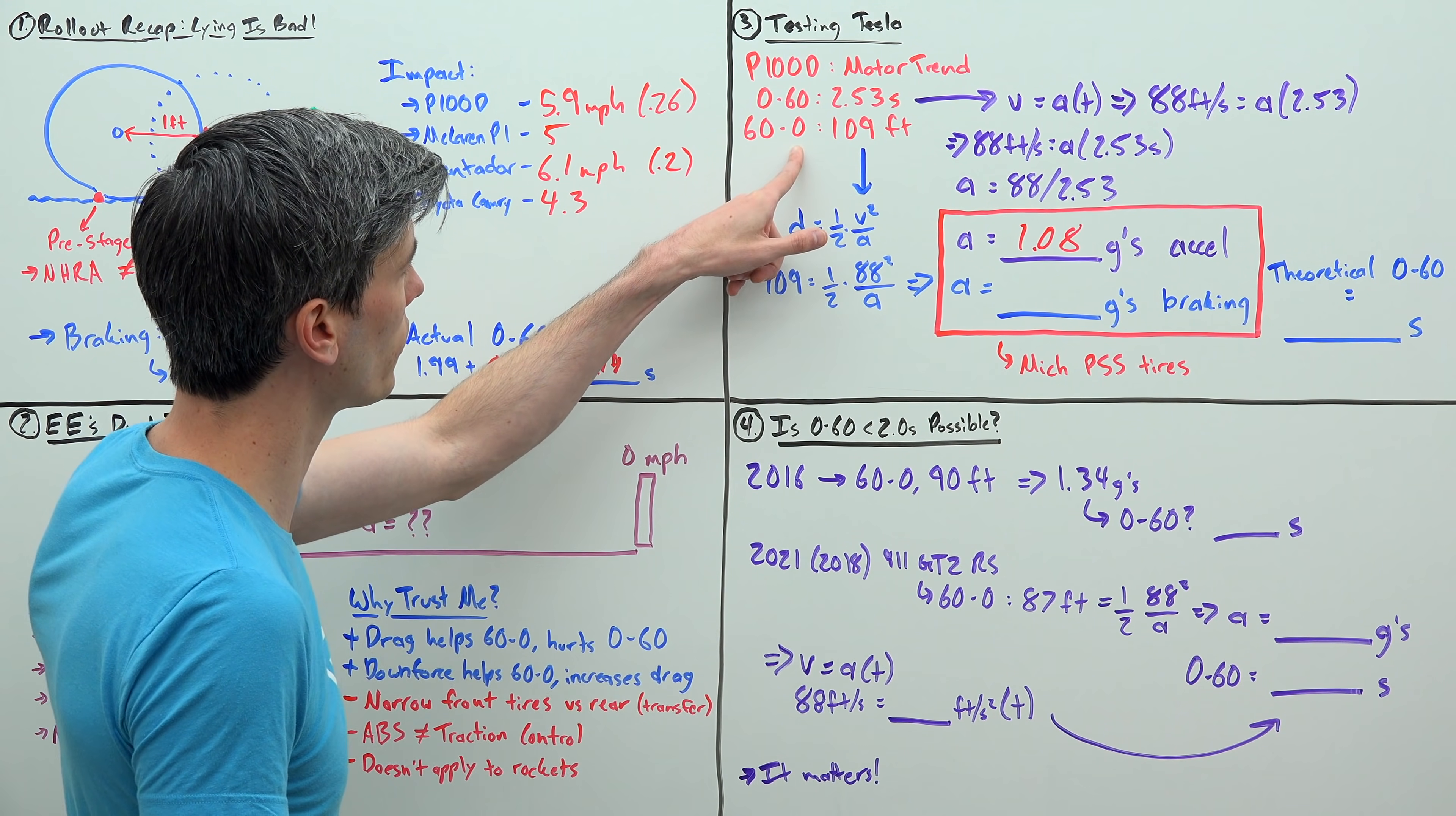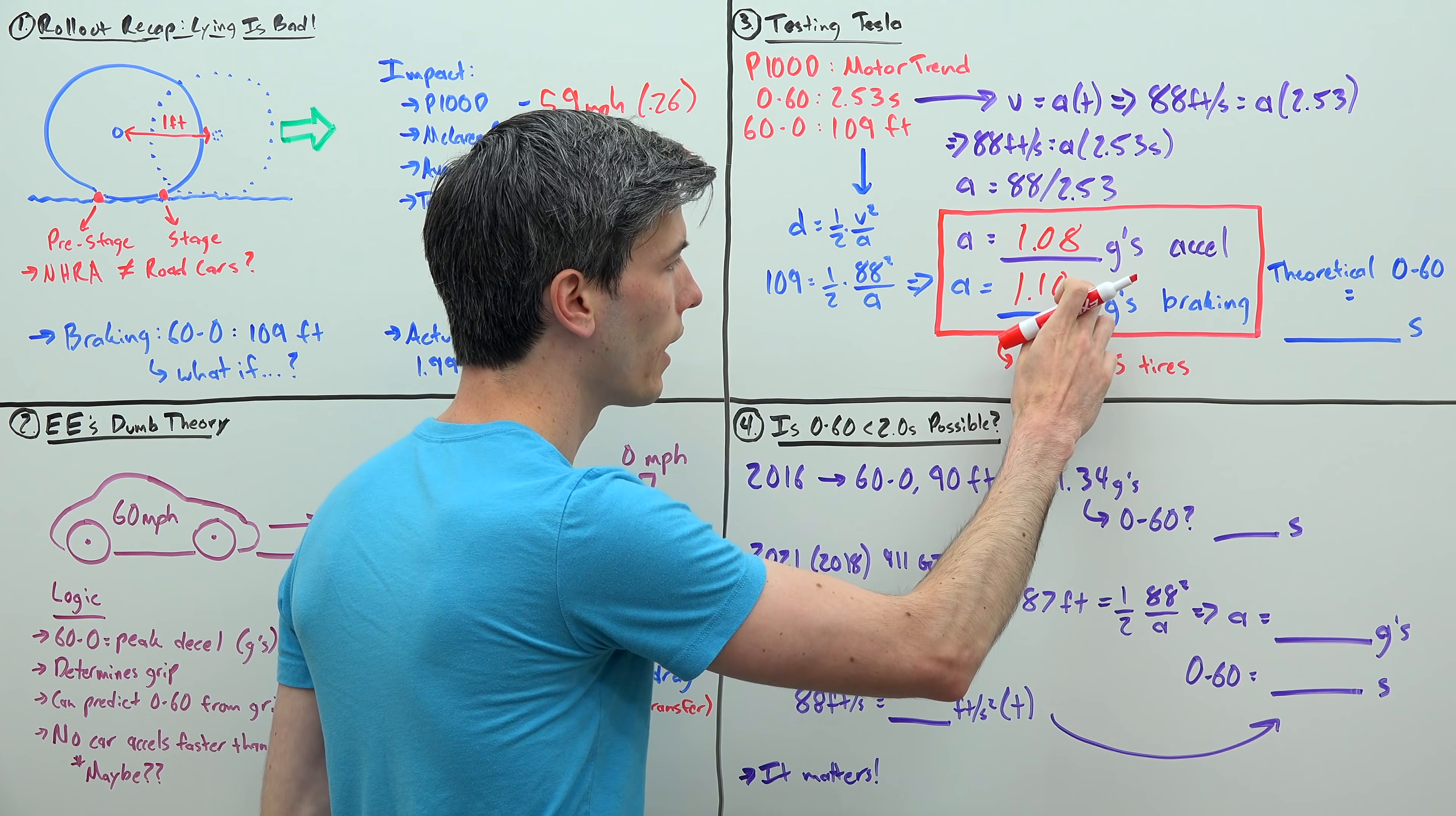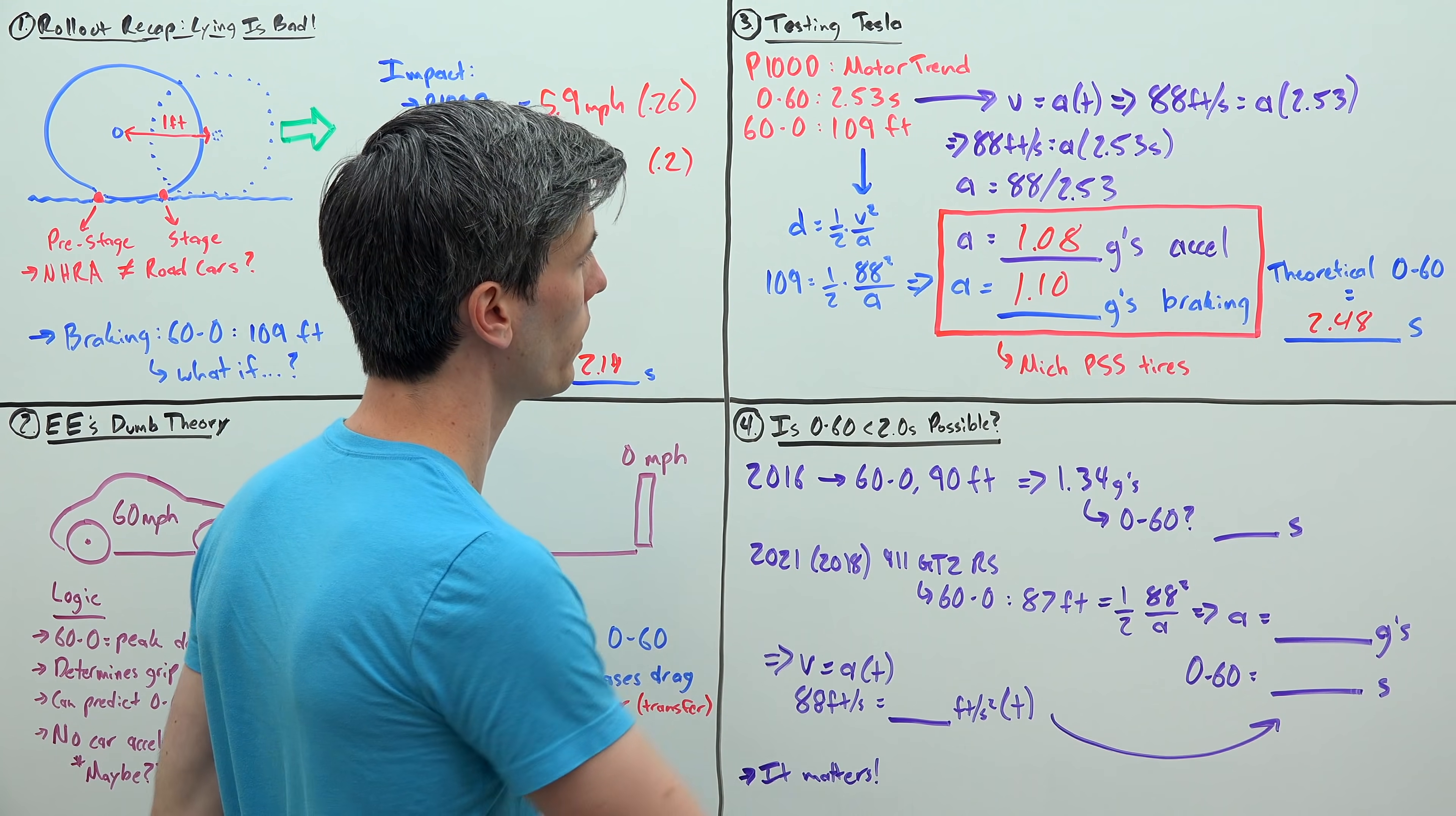Now, from that braking distance of 60 down to 0 of 109 feet, we can do the math and figure out the average deceleration there, which is 1.10 g's. And as I mentioned earlier, you can't out-accelerate your braking, right? So the acceleration g-force is just slightly less than the peak braking g-force. So your theoretical 0 to 60 in this case would be 2.48 seconds, and the reality was 2.53 seconds.